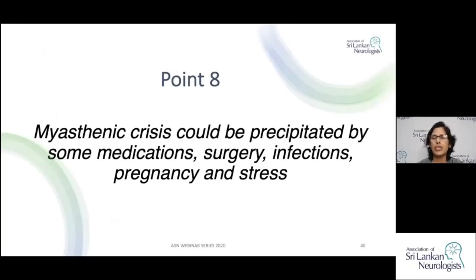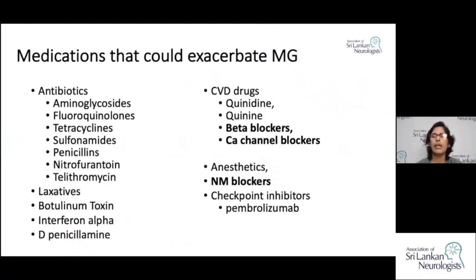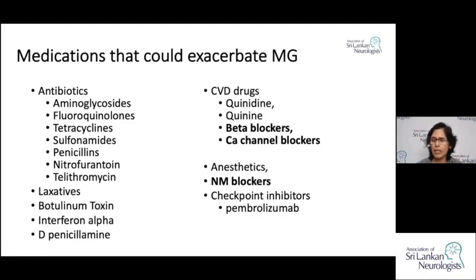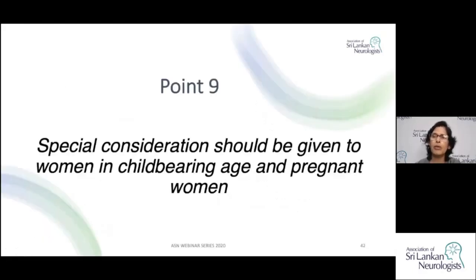Myasthenia crisis can be precipitated by medications, surgery, infections, pregnancy, and stress. Drugs that can exacerbate myasthenia gravis include aminoglycosides, fluoroquinolones, beta-blockers, calcium channel blockers, botulinum toxin, and neuromuscular blocking agents. Infections and physical stress can also precipitate worsening.